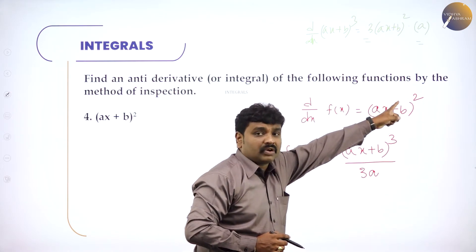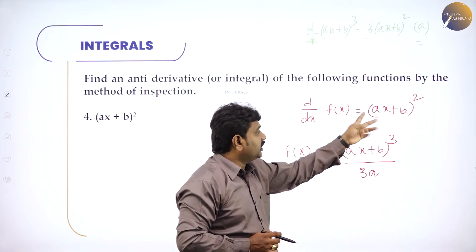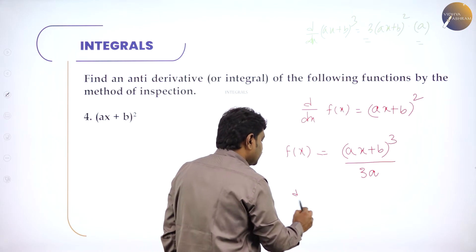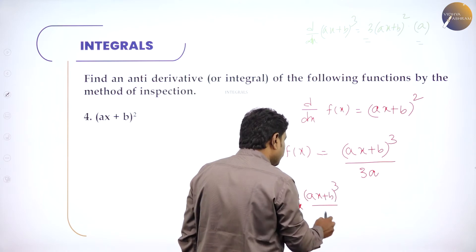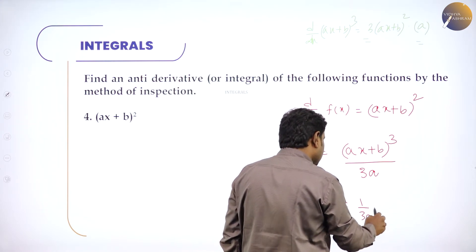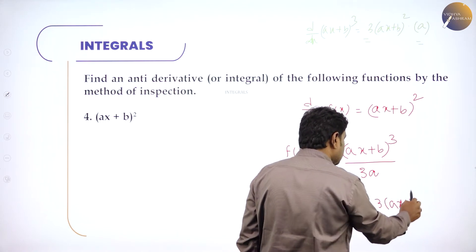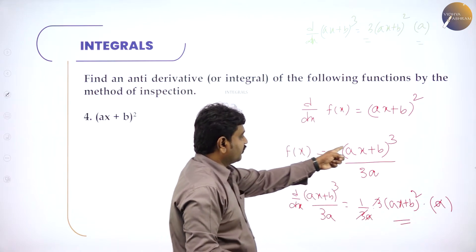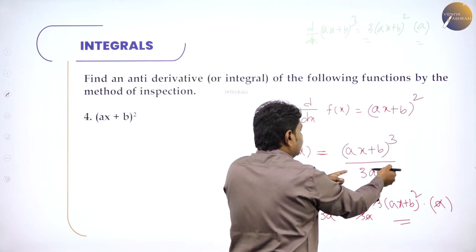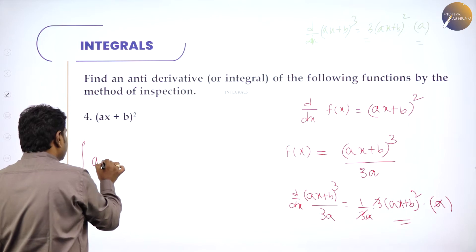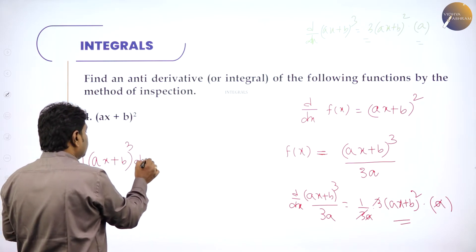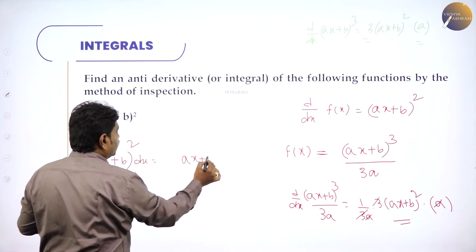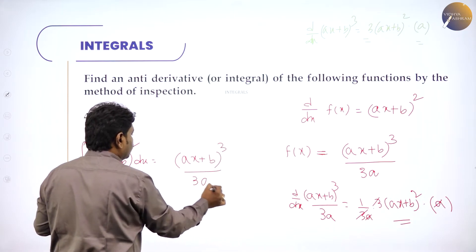The power should increase by 1, and to eliminate 3 and A I divide by 3A. Trial: d/dx of (Ax + b)^3 by 3A — take 1/(3A) out as constant, derivative gives 3A·(Ax + b)^2 into A; 3, 3 and A, A cancel, leaving (Ax + b)^2. So by inspection, the integration of (Ax + b)^2 with respect to x is (Ax + b)^3 divided by 3A, plus C. Differentiate the right-hand side and you will get it back.